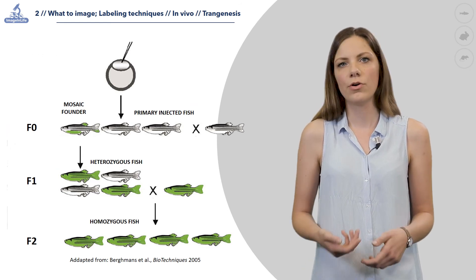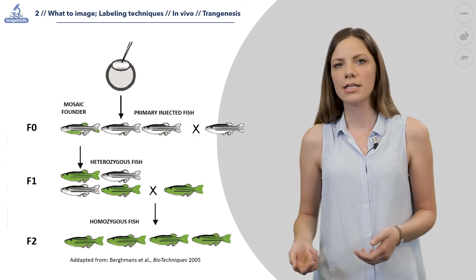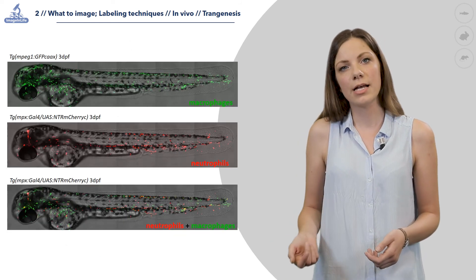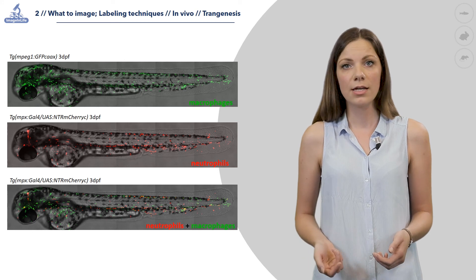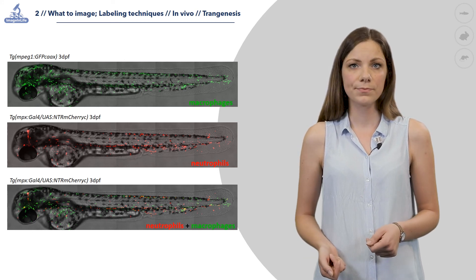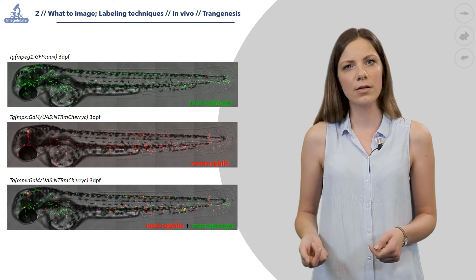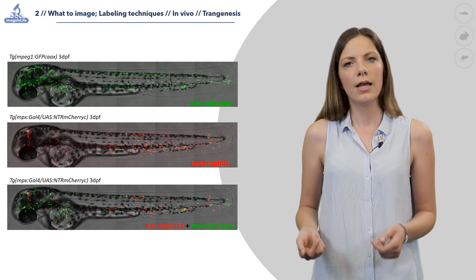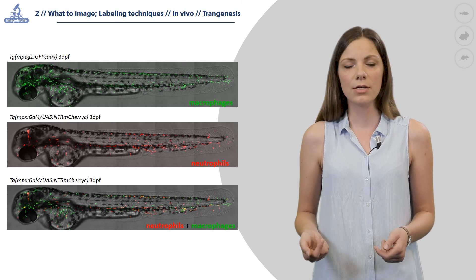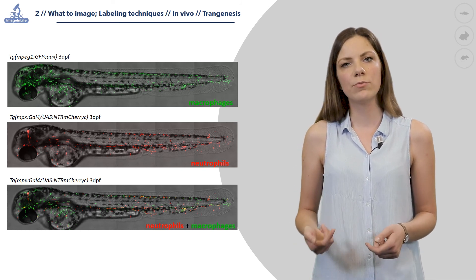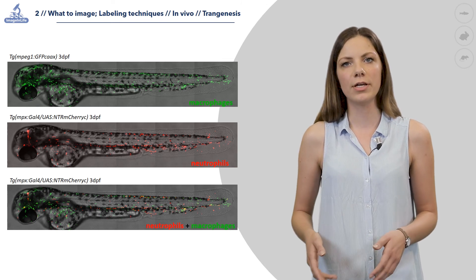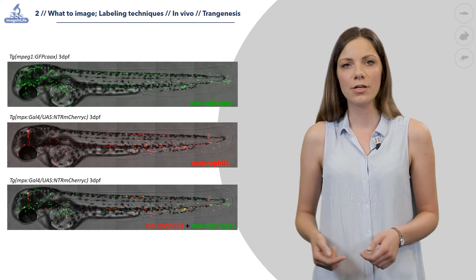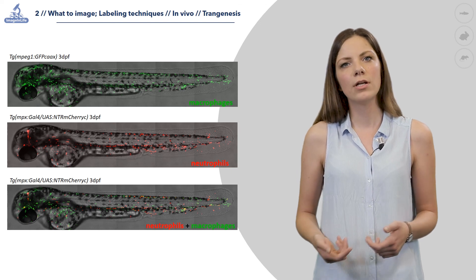This fluorescent protein, or labeled cells, can then be monitored by different techniques of fluorescent microscopy, which will be mentioned in the following weeks. Here you can see examples of images of transgenic zebrafish embryos taken by spinning disk confocal microscope. The target gene in the first case is MPEG1, specific for macrophages, so all macrophages in this larva are labeled by green fluorescent protein. In the second case, the target gene is MPX, expressed in neutrophils, and fused to mCherry red protein, so neutrophils appear in red. By labeling two cell populations in different colors, as shown in the third image, we can easily follow their interaction and behavior by fluorescent microscopy.